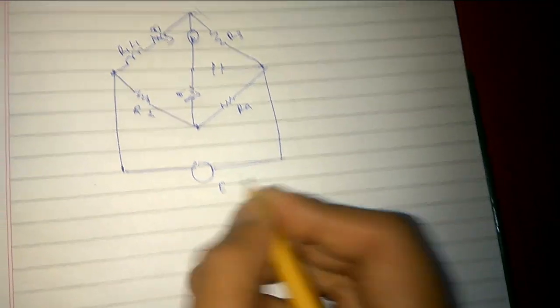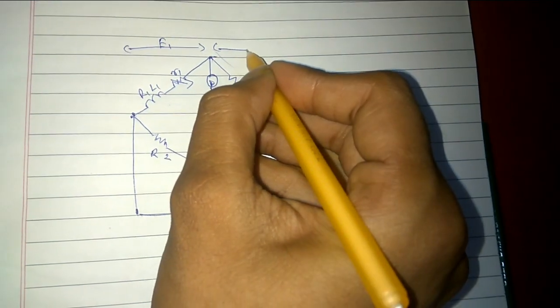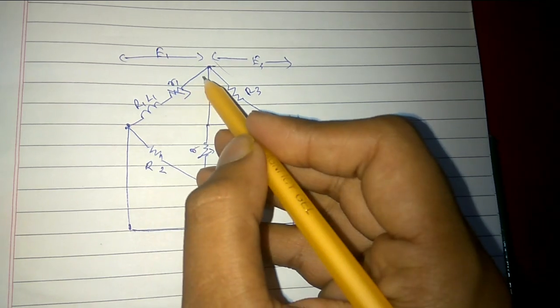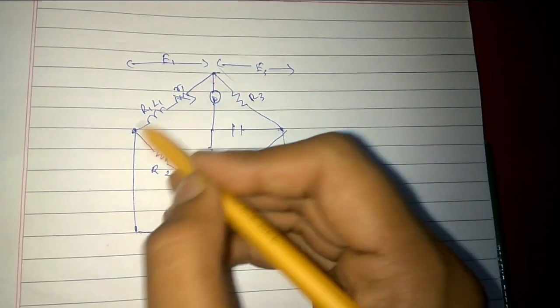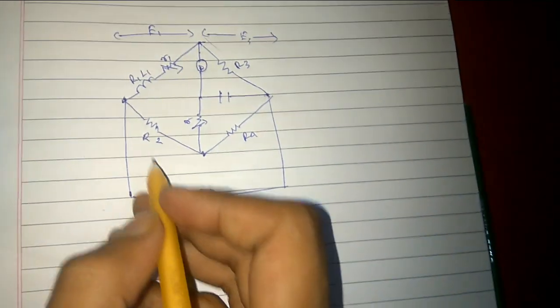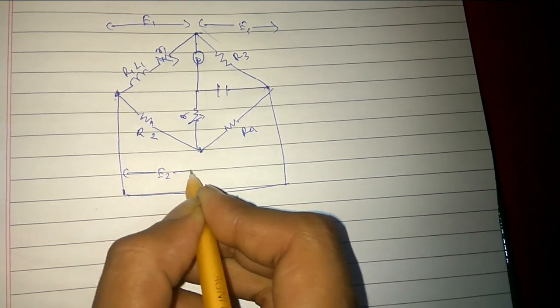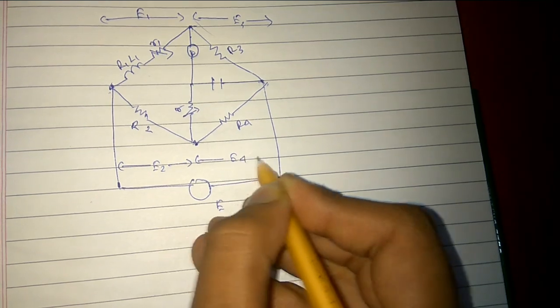This is our supply E. This is our potential E1, and this is E3. E1 means if we take our voltmeter and connect at these two points, we get E1. Similarly E3 is between these two points, E2 here, and E4 between these two points.